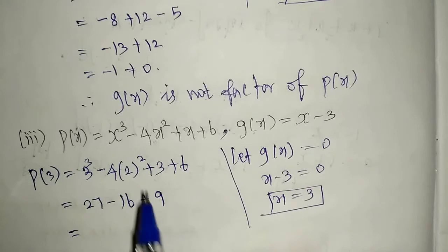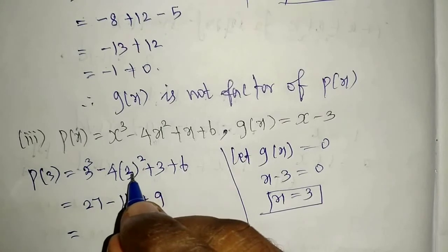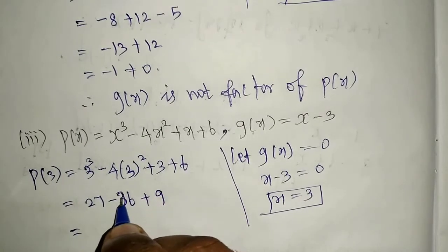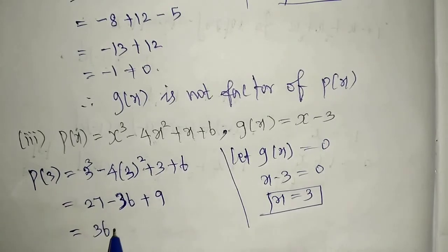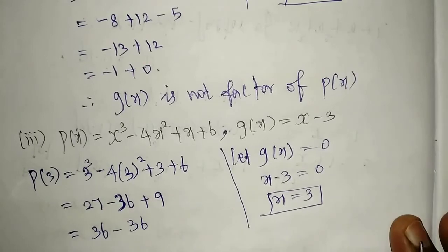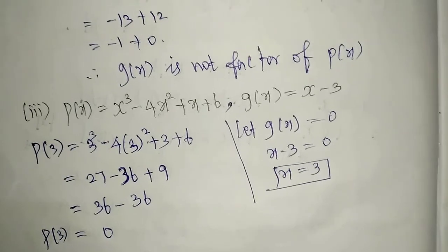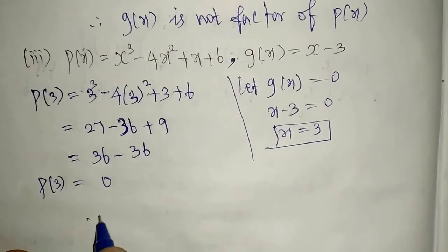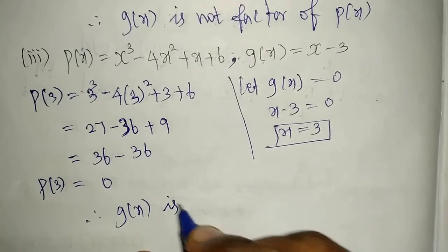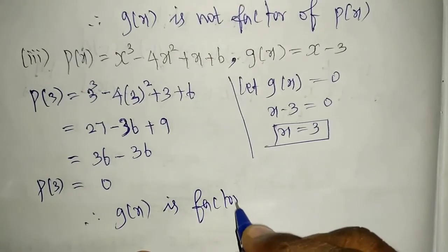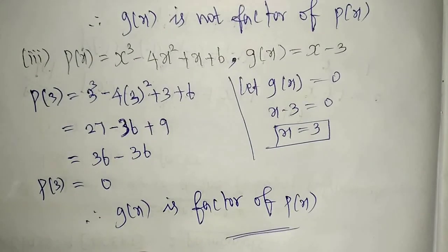So correcting: p of 3 equals 27 minus 4 times 9 plus 3 plus 6. That gives 27 minus 36 plus 3 plus 6. Now 27 plus 9 equals 36, and 36 minus 36 equals 0. So we get 0. When substituting, you have to be careful. Therefore, g of x is a factor of p of x. That is our complete answer.